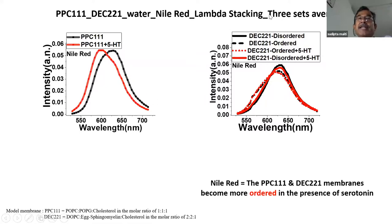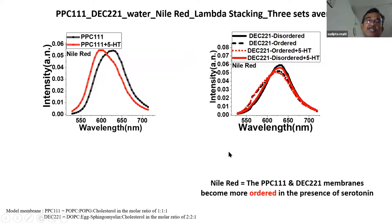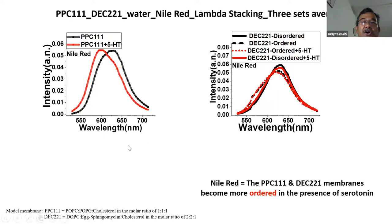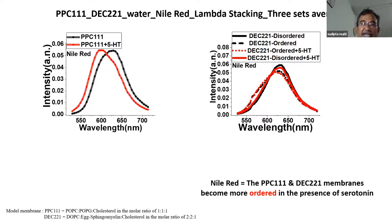All hell broke loose when we wanted to do Nile Red or Laurdan. On the left is the Nile Red spectrum. Black is without serotonin — also called 5-HT.